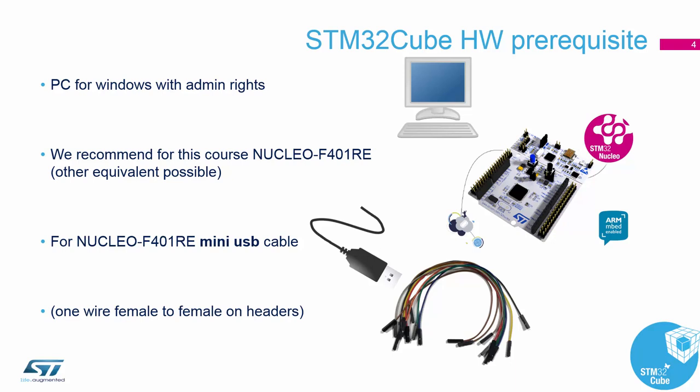For the Nucleo kit, discovery kit, or eval board you definitely need one USB cable. For the Nucleo kit F401 RE you need the mini USB cable for programming and debugging. And optionally, during the hands-ons when we send data in some additional labs, we will also use one wire to connect two pins together to demonstrate the functionalities.